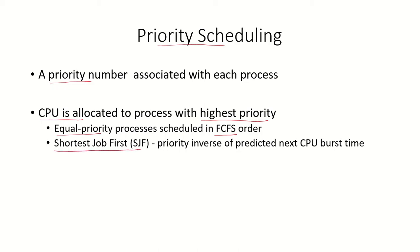If you think of the shortest job first algorithm, you can consider that its priority is the inverse of the predicted next CPU burst time. This is also a kind of priority scheduling because the priority is based on the duration of the next CPU burst. If the next CPU burst is larger, the priority of the process is lower, and vice versa.